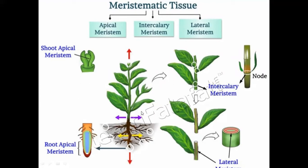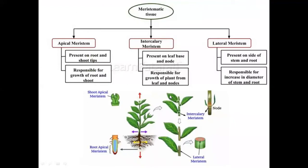Intercalary meristem is located between regions of permanent tissues, like at the base of the node, base of the leaf, and inter-node regions. It is responsible for the growth of leaves and inter-nodes. Lateral meristem is present on the sides of both the stem and root. It is responsible for increasing the diameter of the stem and root.